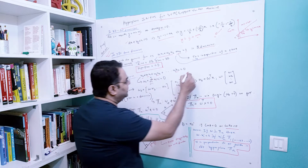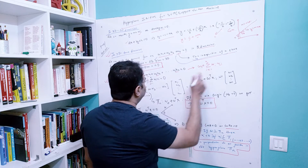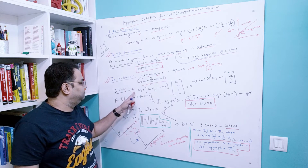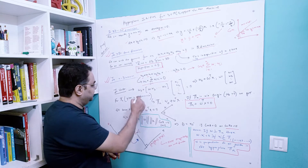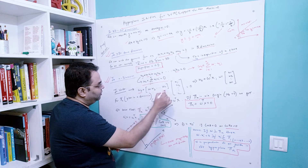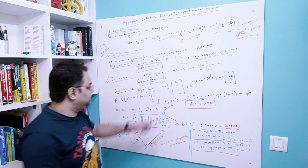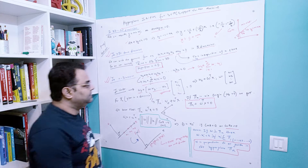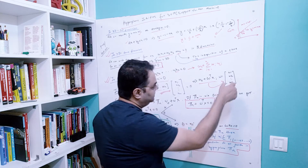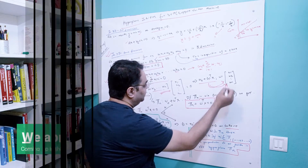In n dimensions we can rewrite the same equation as w0 (the constant) plus the dot product of w and x equals 0, which expands to w1·x1 + w2·x2 + ... + wn·xn = 0. That is the generalized form for n dimensions. We can also write it in sigma notation as w0 + Σ(wi·xi) for i = 1 to n. In vector notation this becomes w0 plus the row vector [w1, w2, ..., wn] multiplied by the column vector [x1, x2, ..., xn], which is w0 + w^T·x.